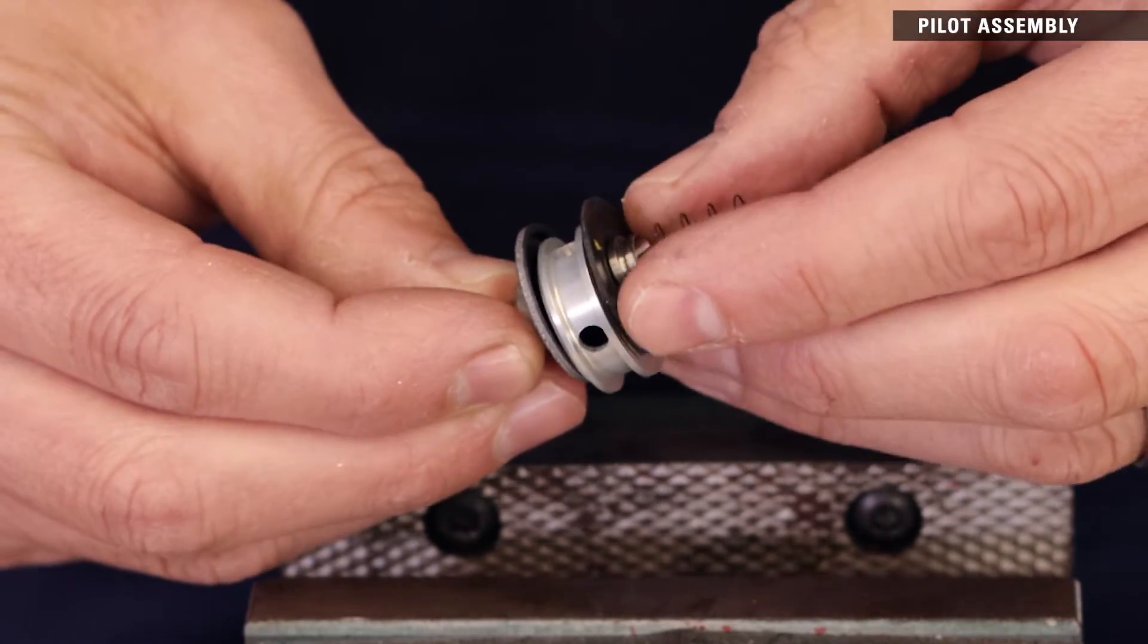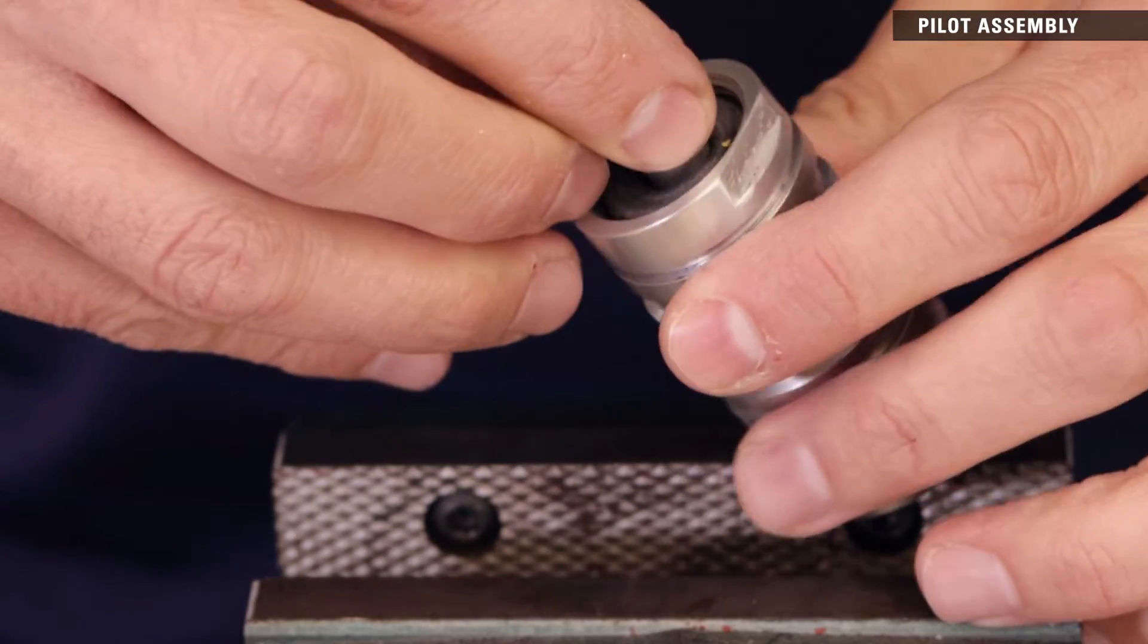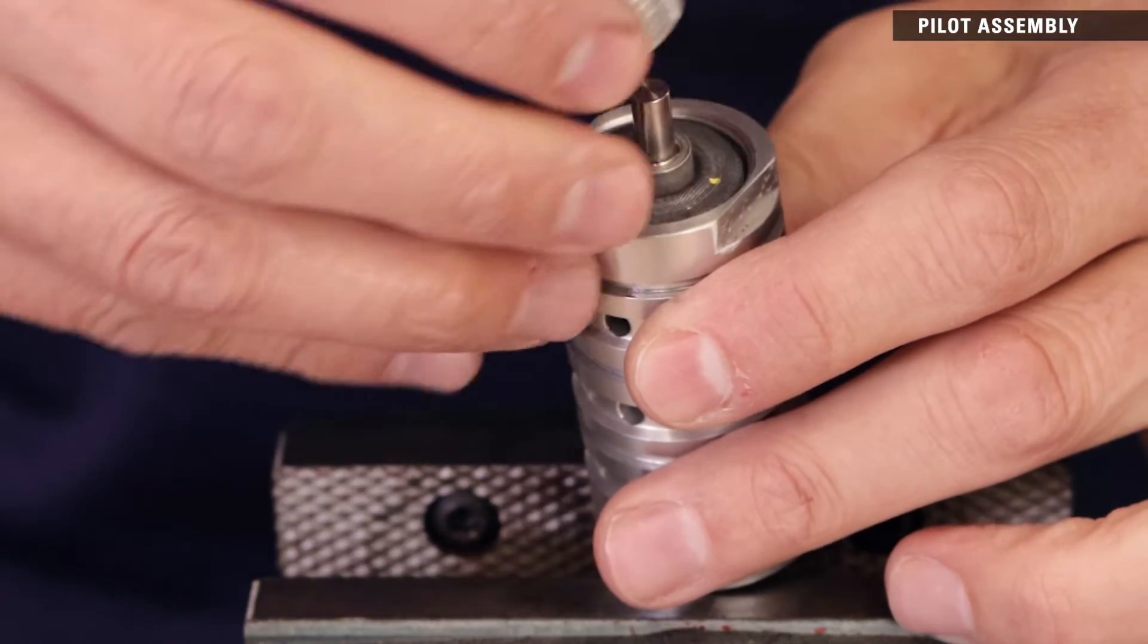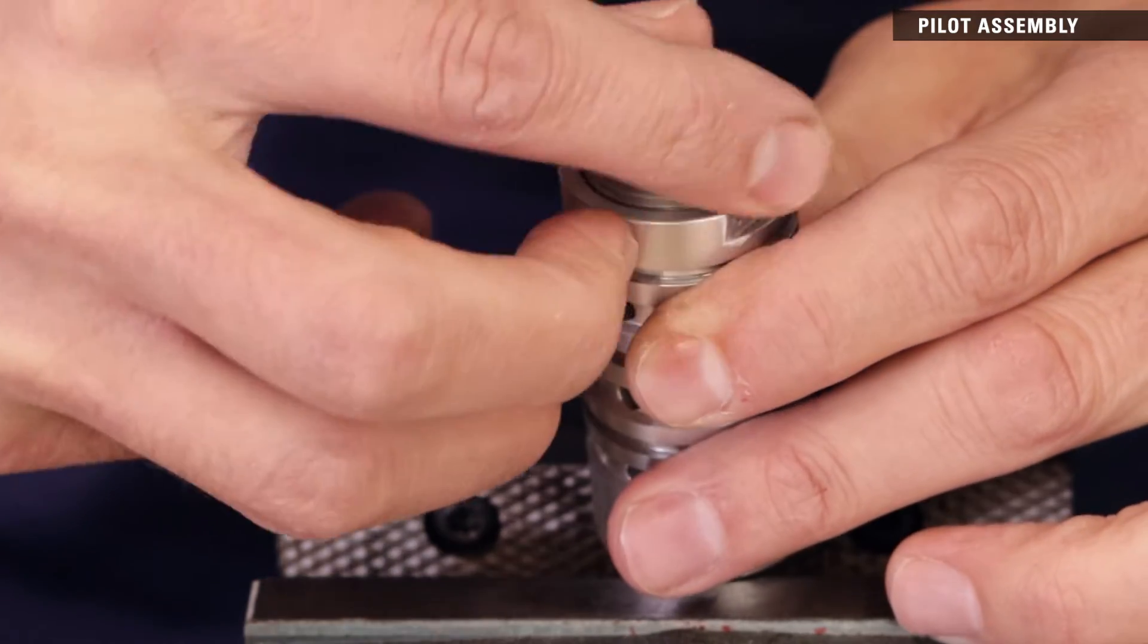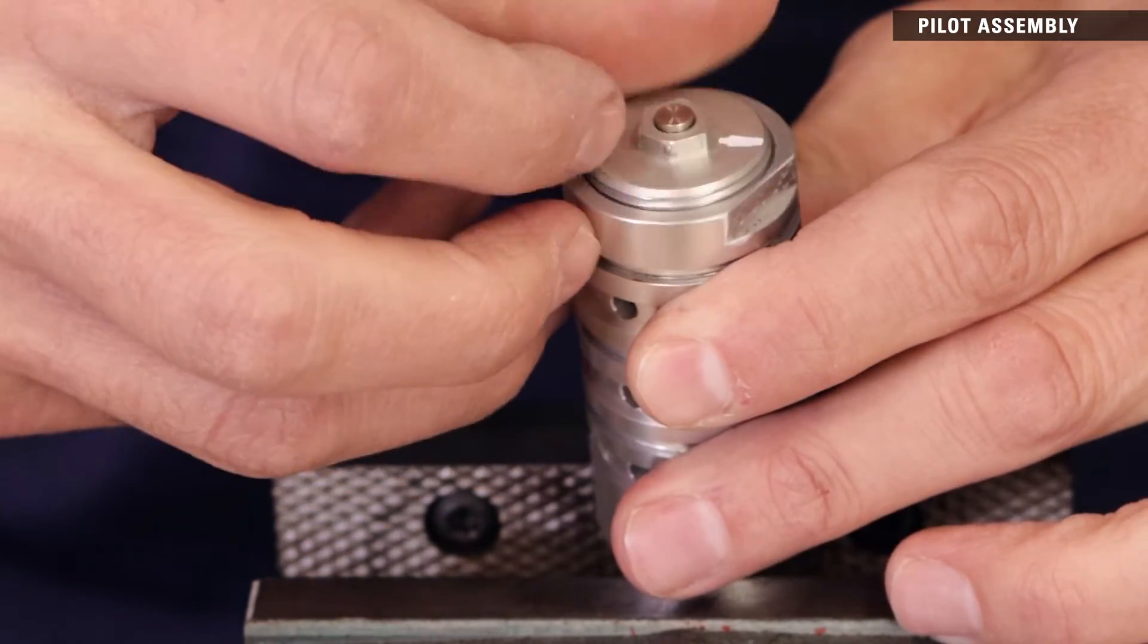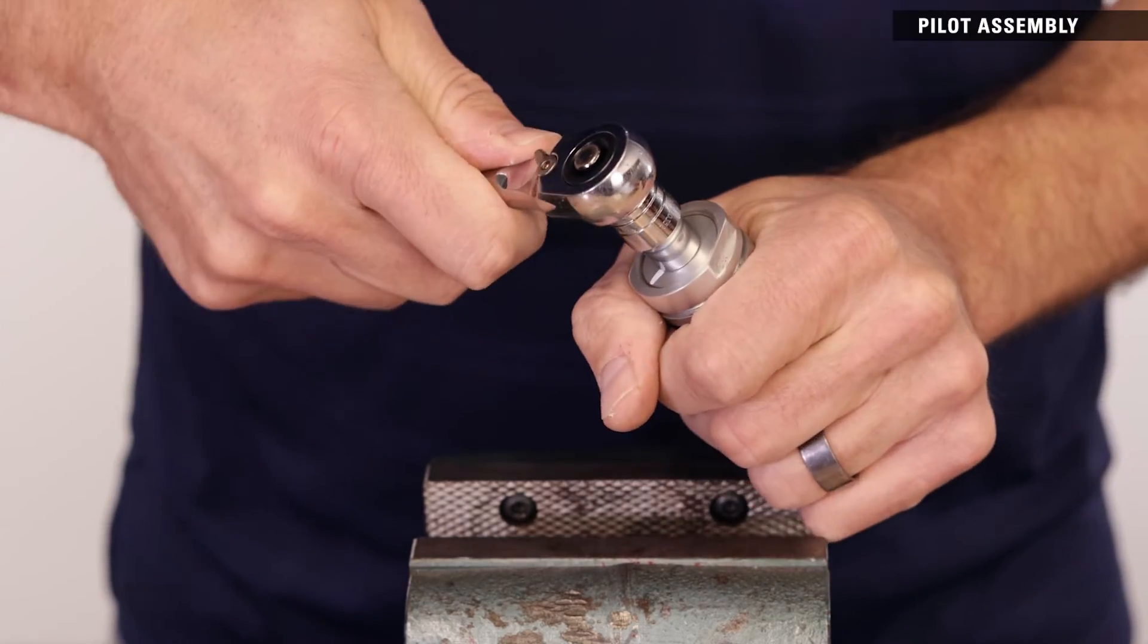Place the lower spring on the lower diaphragm assembly and install it into the pilot cartridge. Thread the lower cap into the pilot body over the lower diaphragm assembly by hand. Use a 3-8 inch socket to torque to 25 to 30 inch pounds.